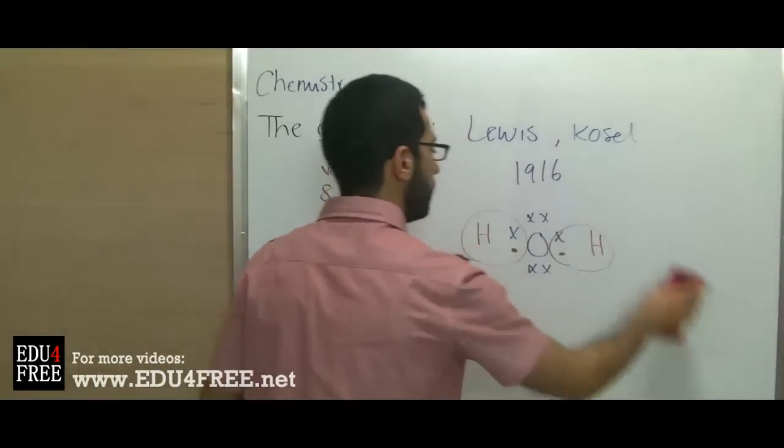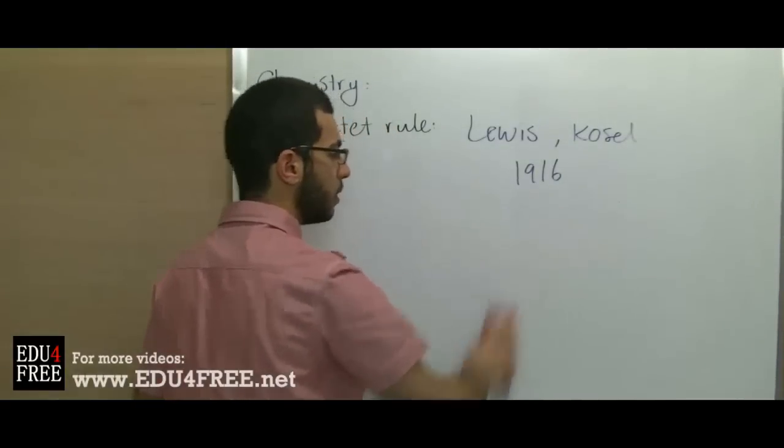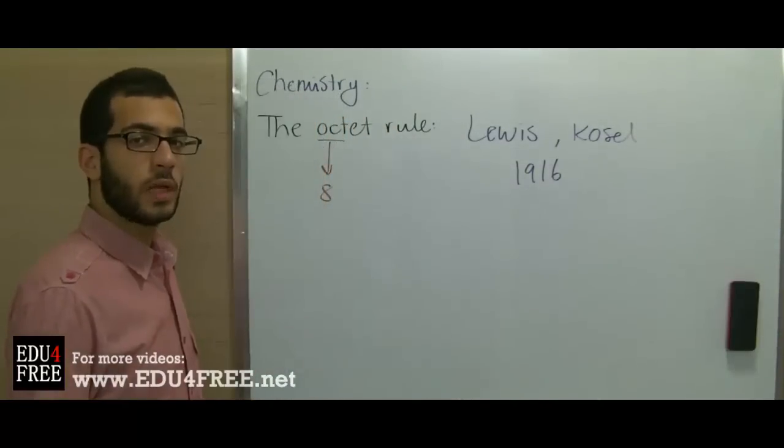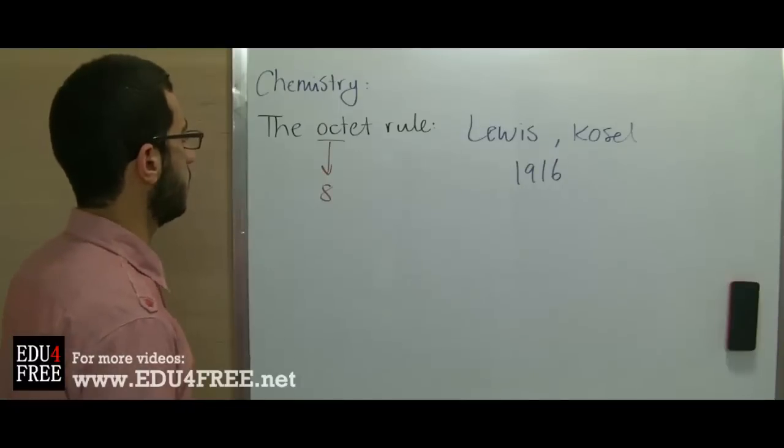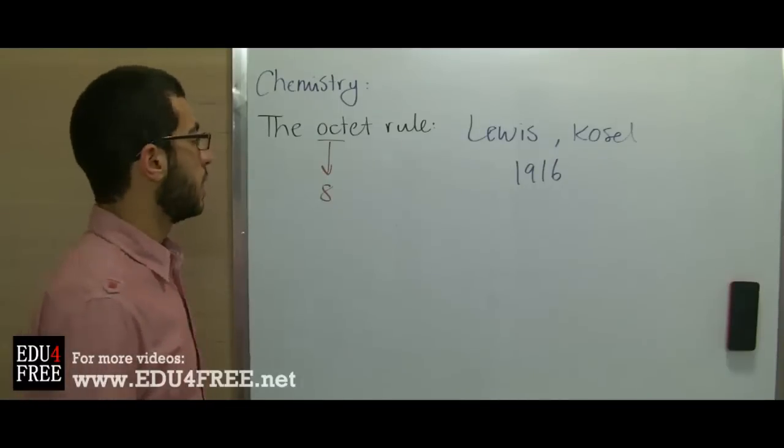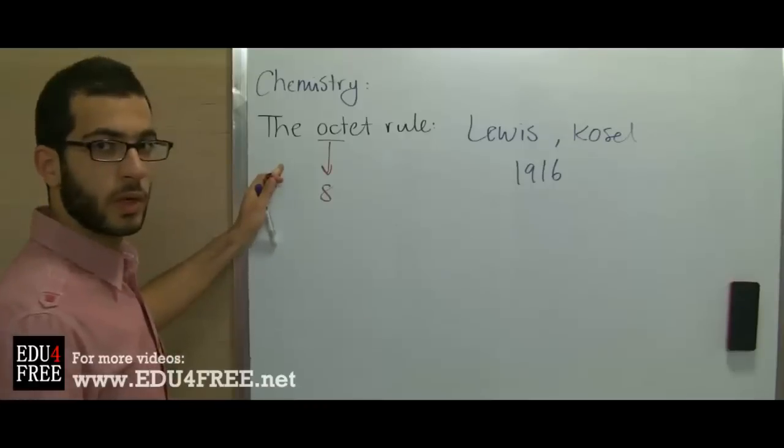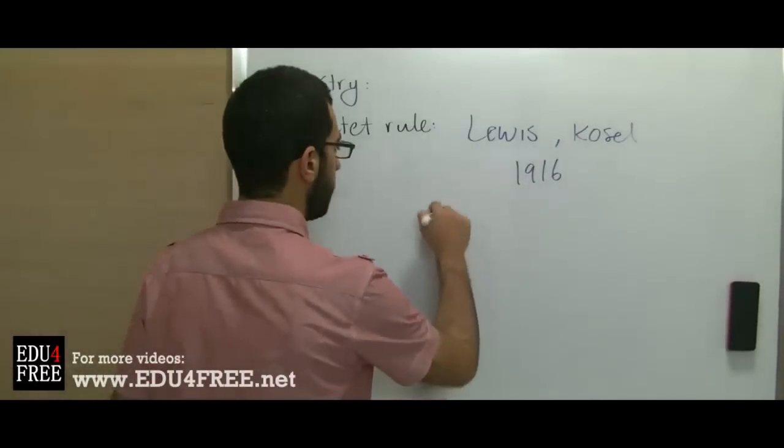This rule doesn't explain the covalent bond in all compounds. This rule has some inadequacies because not all atoms in covalent bonds tend to reach the octet structure.